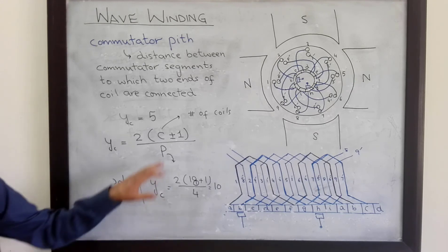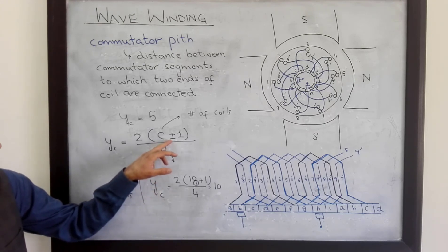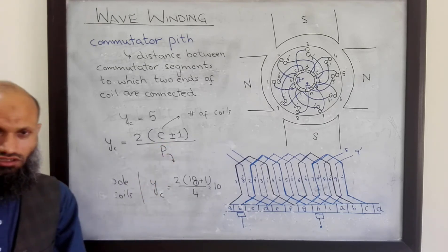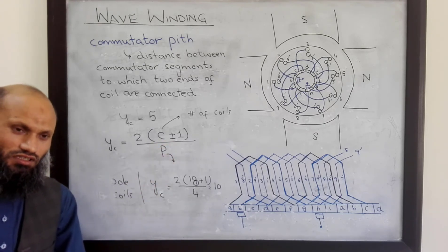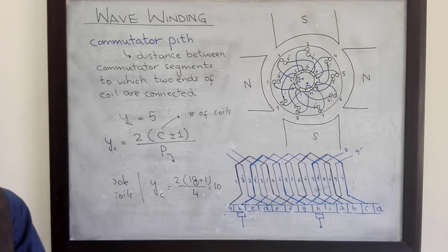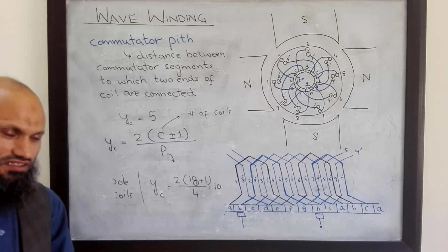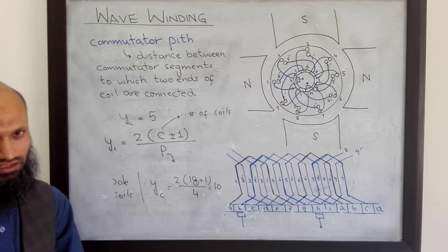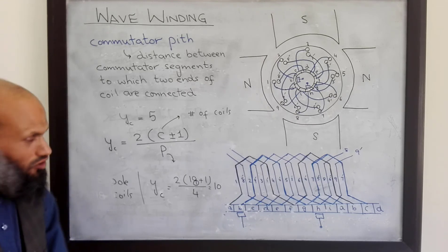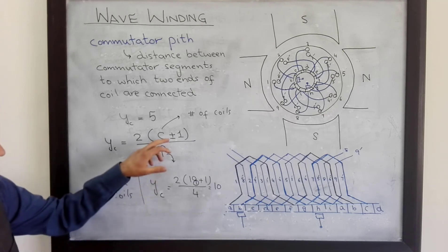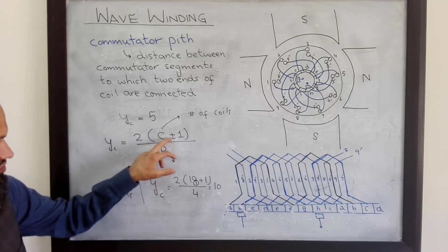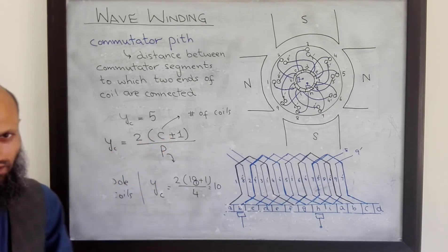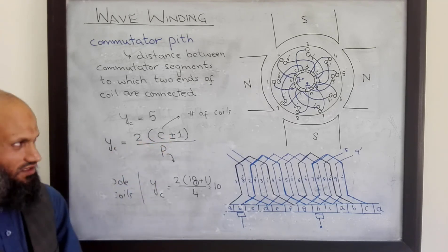In the next lecture, we shall briefly talk about different variations that are there in the design of real DC machines. Over there, we shall also talk about this plus and minus sign.